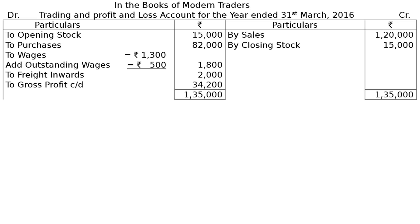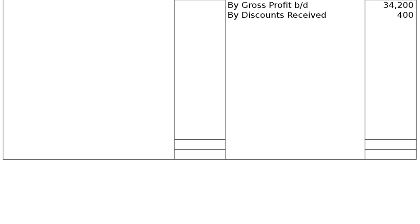Moving to the profit and loss account, on the credit side we write by gross profit brought down rupees 34,200. The next entry is by discount received rupees 400, and by rent revenue rupees 1,200. Rent revenue means it is an income — money coming in.